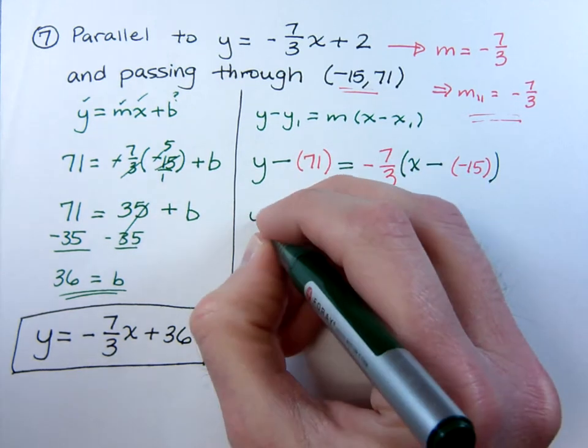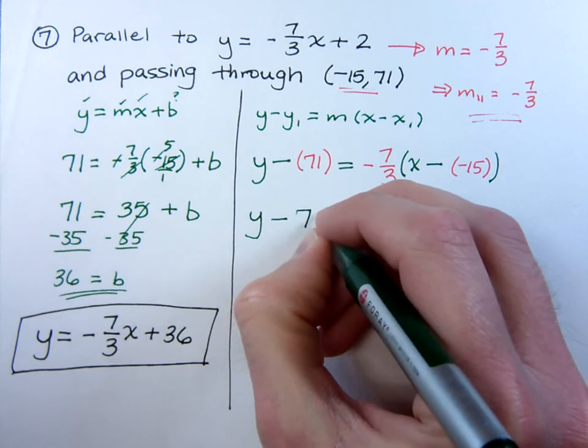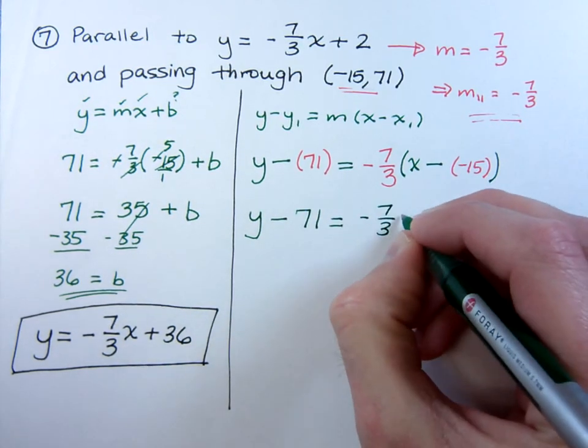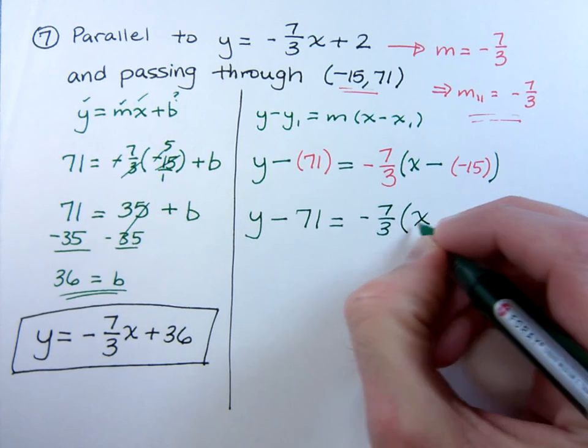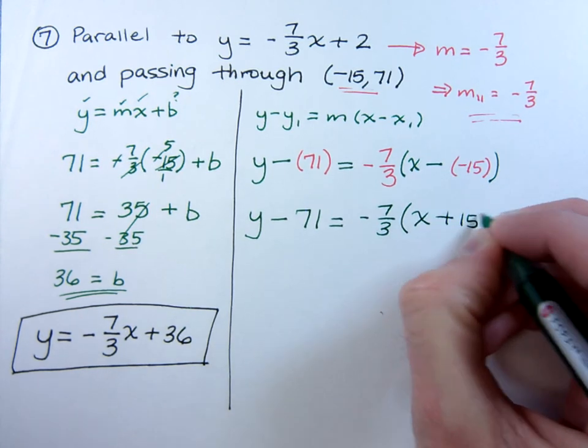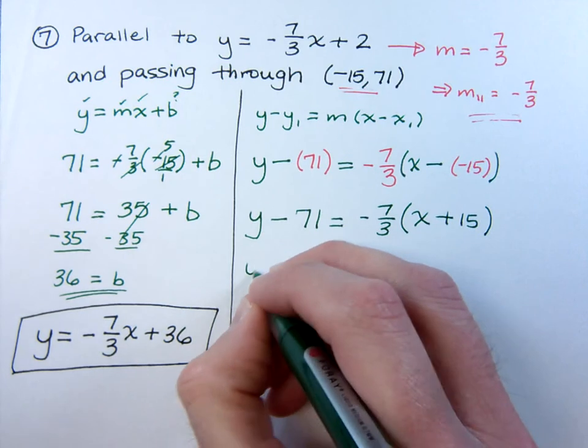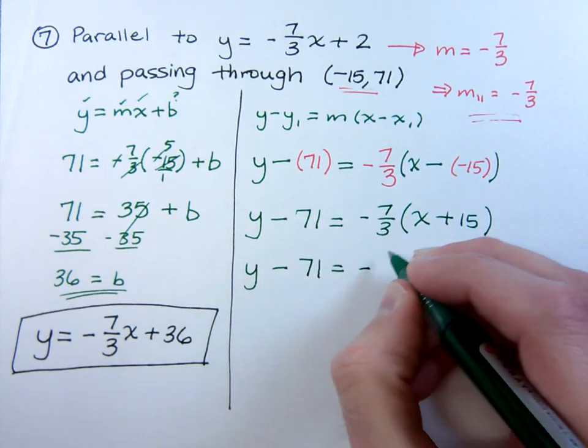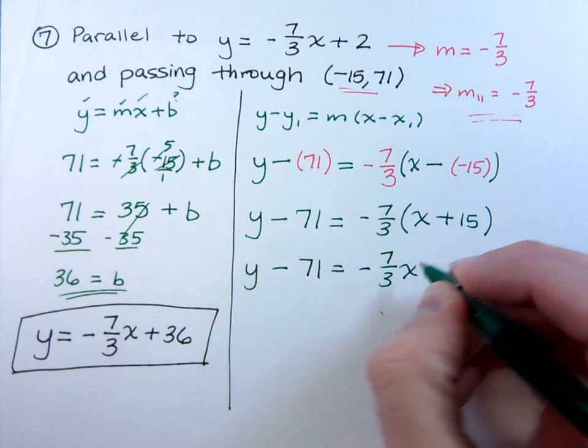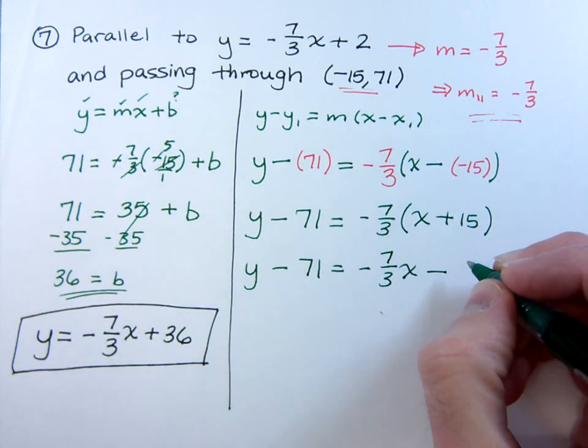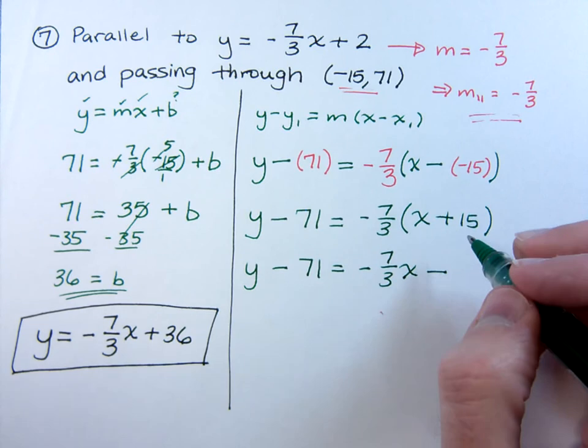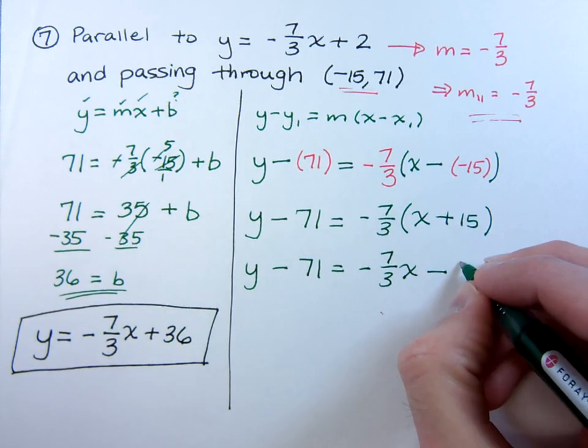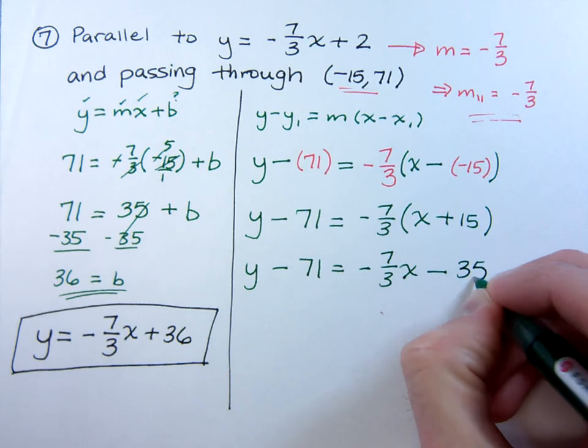So let's just rewrite this and clean it up. So y minus 71 is equal to negative 7 thirds times x plus 15. And this is where we want to distribute your negative 7 thirds. So negative 7 thirds x minus, because a negative times a positive is a negative. 3 is going to reduce with the 15 to make that 5, so this is going to be a minus 35.